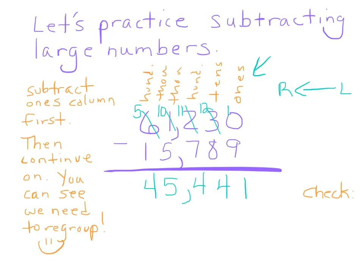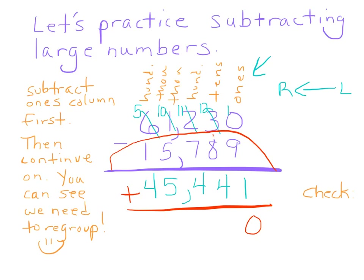Now let's check our work. The way we want to check our work is we're going to take these two numbers and add them together to see if it matches the top number. Nine plus one is ten — carry your one. Eight plus four is twelve, plus one is thirteen — carry the one. Seven plus four is eleven, plus one is twelve — carry the one. Five plus five is ten, plus one is eleven — carry the one. Four plus one is five, plus one is six. And presto — check, we've done it.